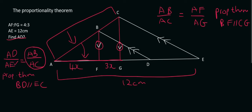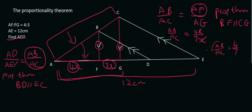AF we know is 4X, and since AF is 4X and FG is 3X, then AG would be 7X. So AB over AC — the X's cancel — equals 4 over 7. This is exactly what we needed, so we can fill it in: AD over AE equals AB over AC, meaning AD over 12 equals 4 over 7. We can then get AD by itself, and that's going to be 48 over 7.